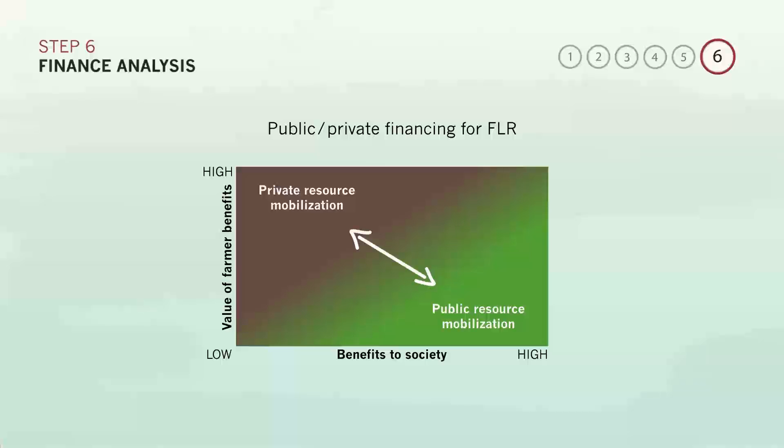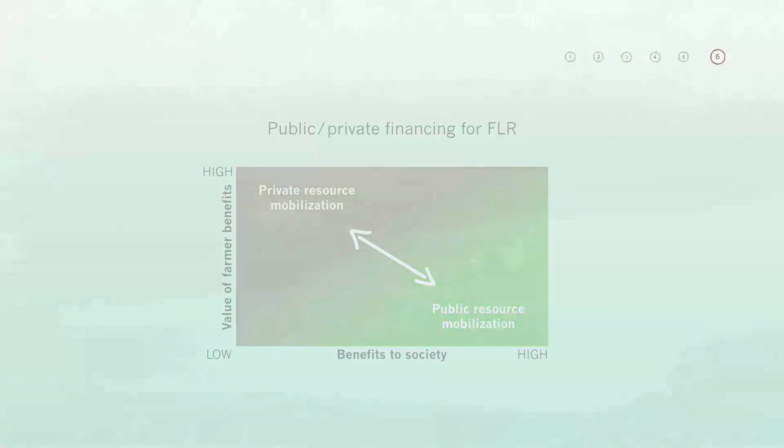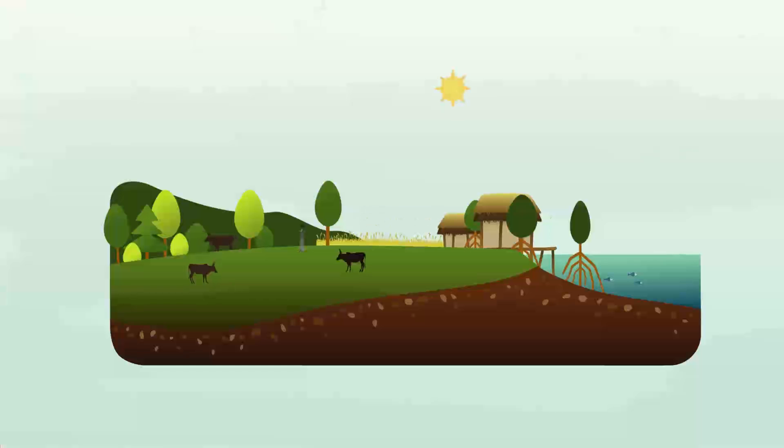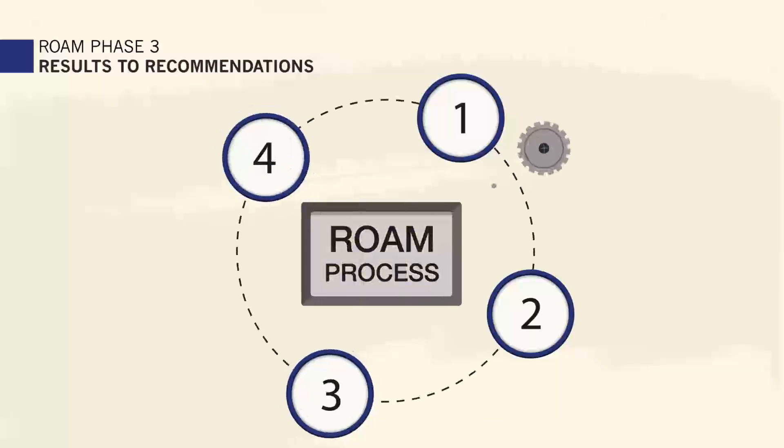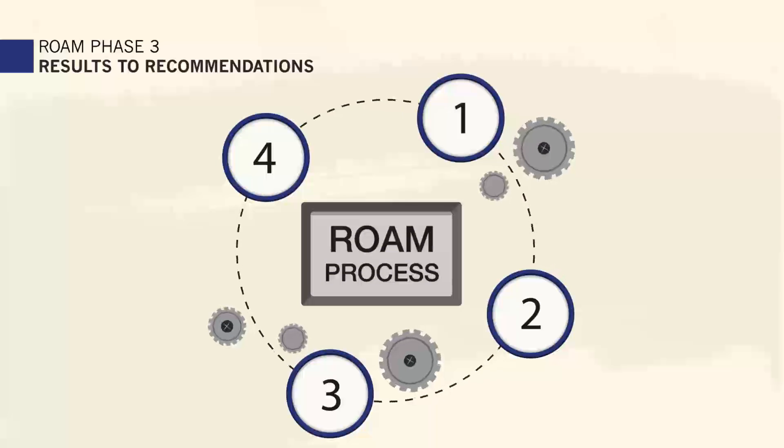When all six analyses are done, you will have solid information to guide restoration and informed decision-making in your area for years to come. In the next phase of ROAM, you will again combine this information with knowledge and insights from key users and stakeholders, to validate your findings and develop recommendations for specifically where and how to accomplish restoration.